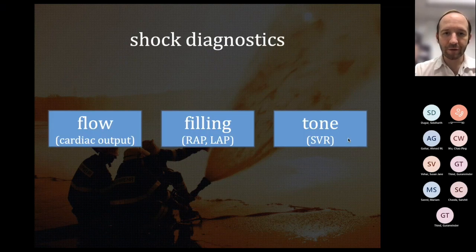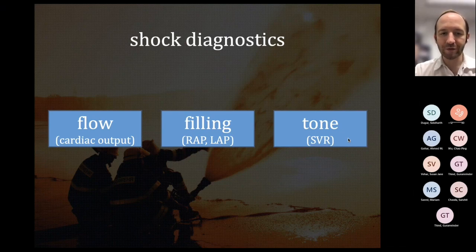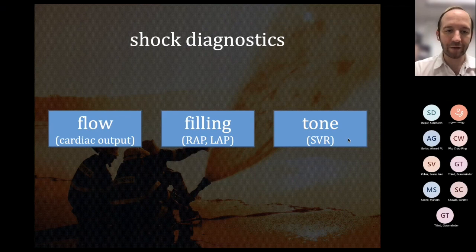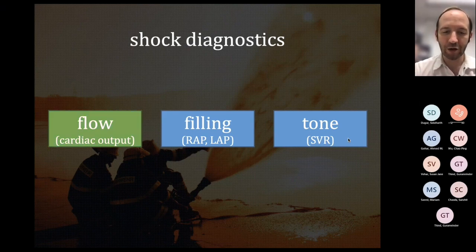The rationale is pretty obvious. If you have a patient in shock and the cause is not obvious, you should be assessing cardiac output. It is the first one in our new paradigm of flow, filling, and tone. If you don't know cardiac output and you don't know why the patient's in shock, you should probably categorize their cardiac output as well as these other features.